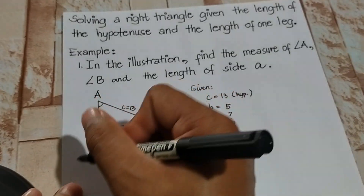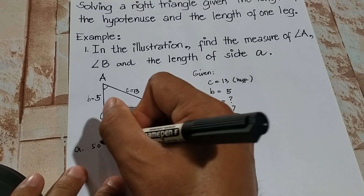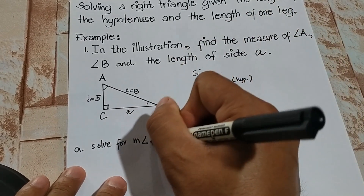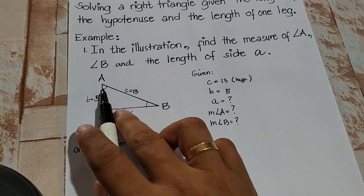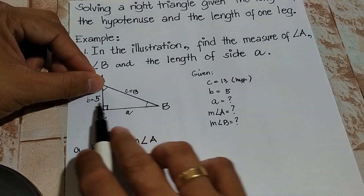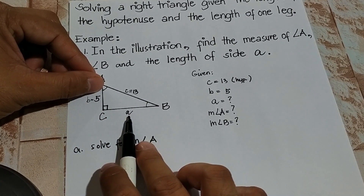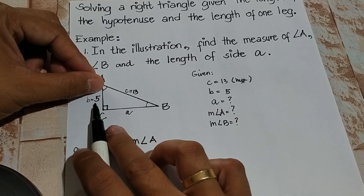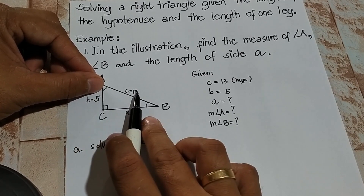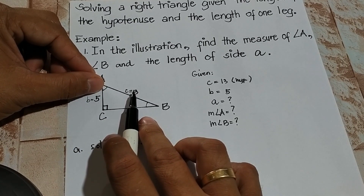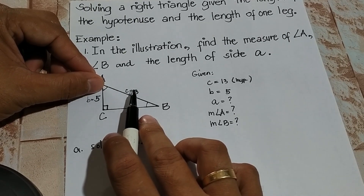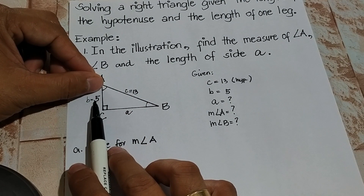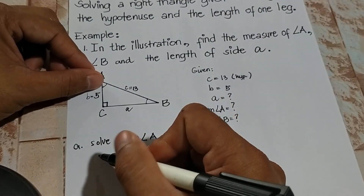First, we have to solve for the measure of angle A. Since A is our opposite side, B is our adjacent, and C is our hypotenuse — from the given we have adjacent and hypotenuse. So if you look at the mnemonic device, which trigonometric ratio should we use? Sine, cosine, tangent, cosecant, secant, or cotangent? Since we have adjacent and hypotenuse, we can make use of cosine.